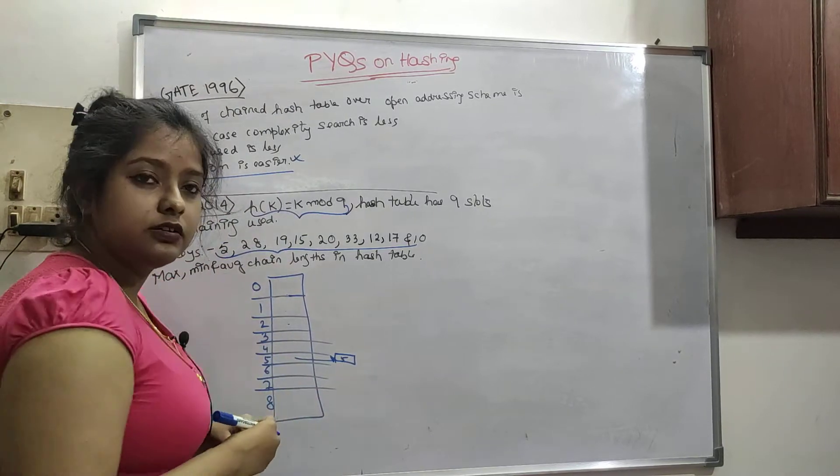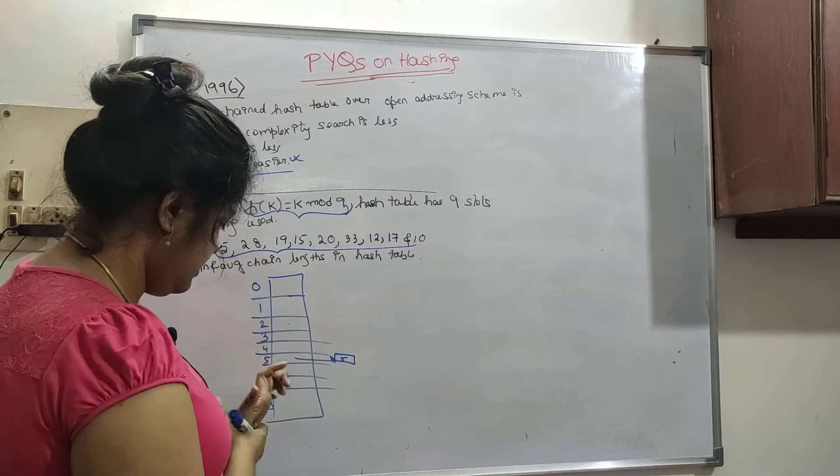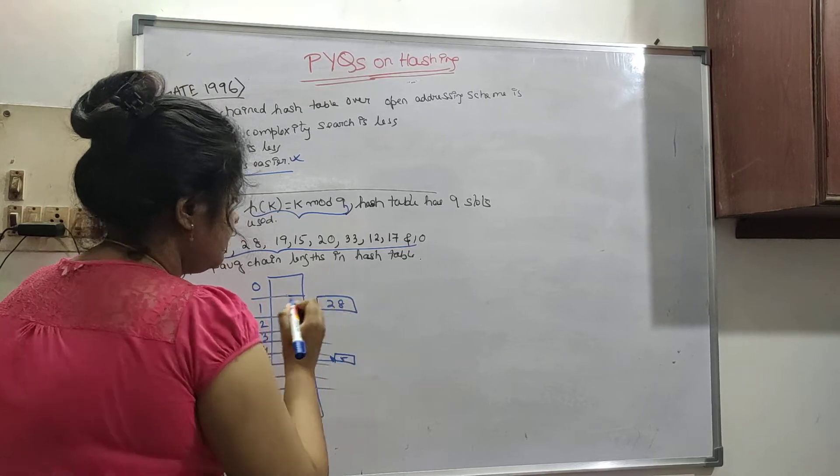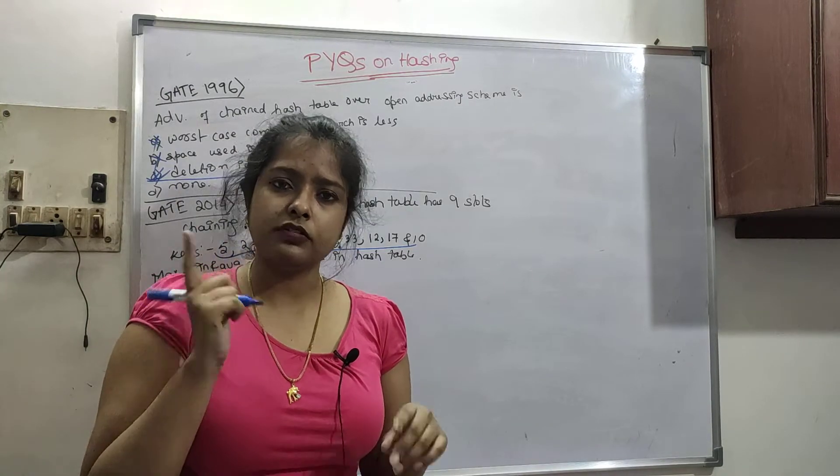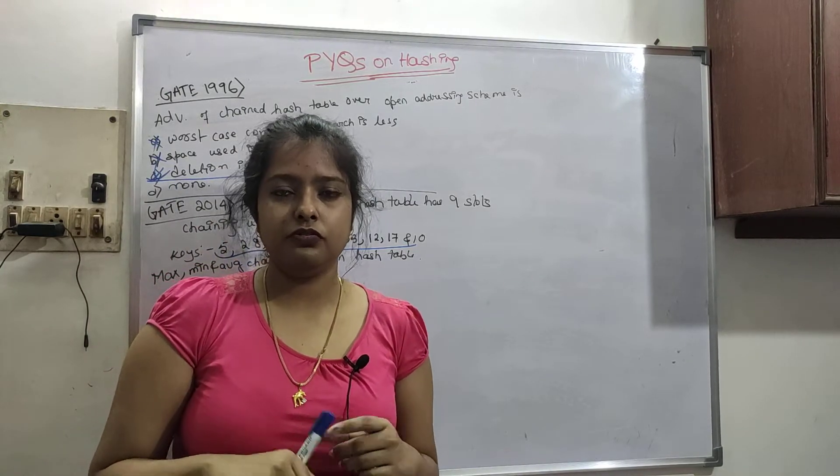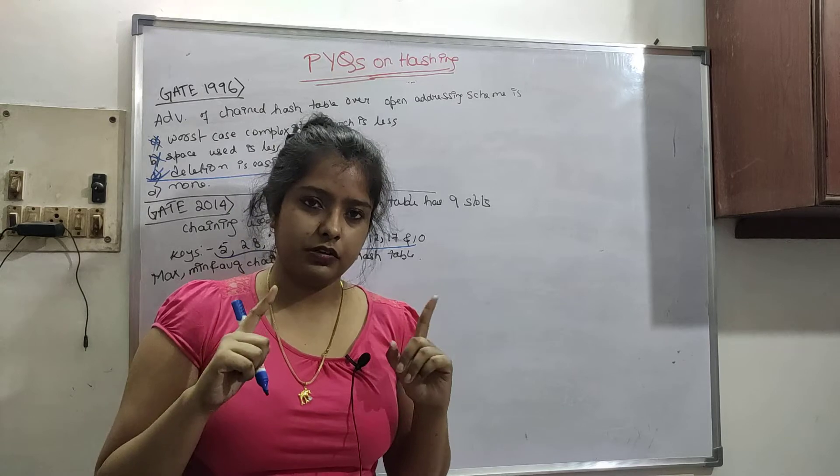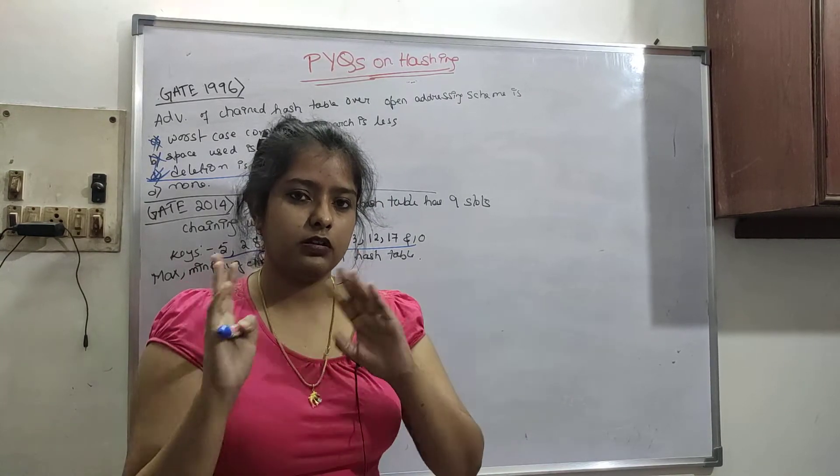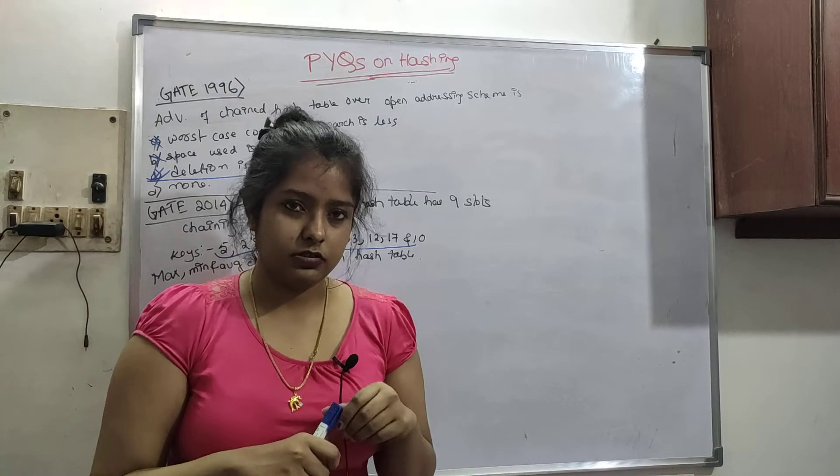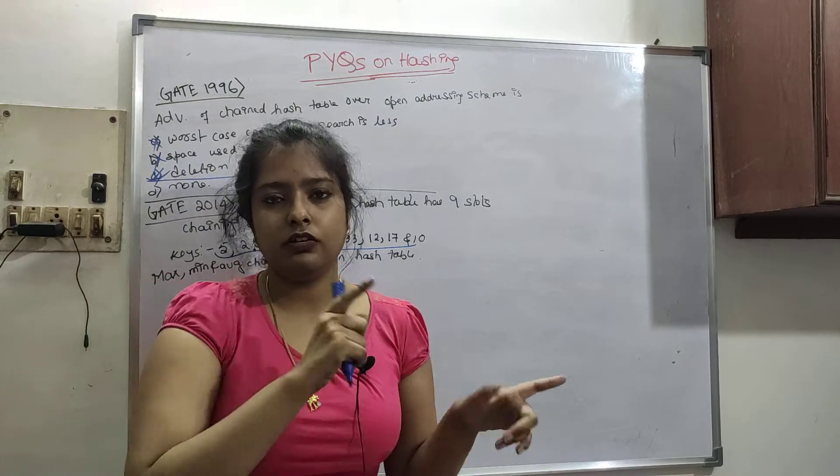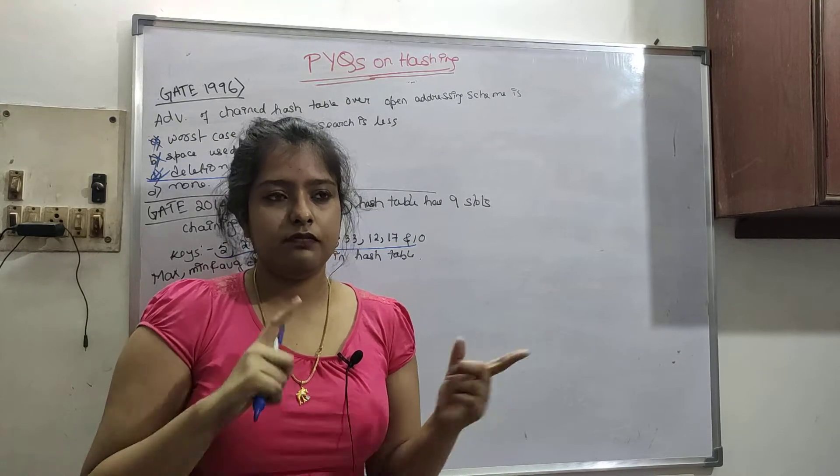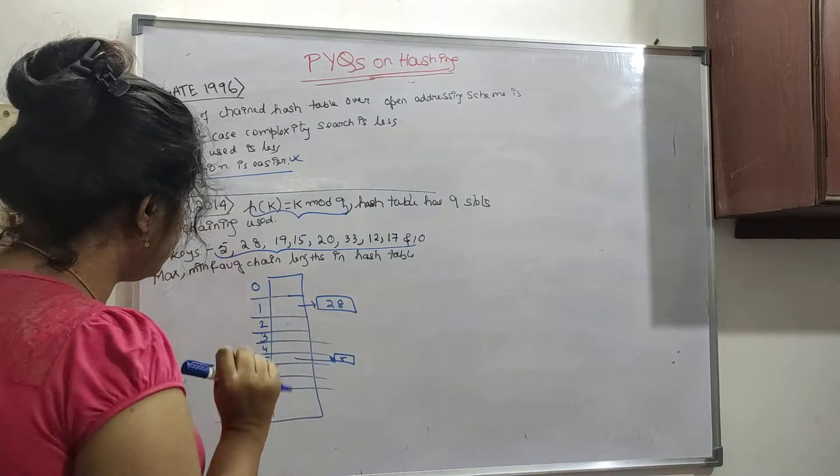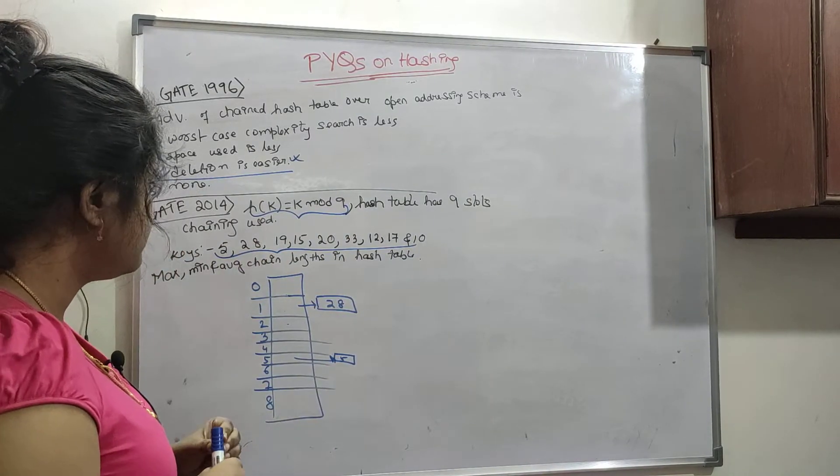Now let us say 28, 28 mod 9 means 1. So in GATE, in virtual calculator, I have seen that mod function is already present. You do not have to do your calculation with pen and paper. You can just put the mod function 28 mod 9, you will get the answer. This is basically easy and I am not very good with calculation. I am always doing calculator in virtual calculator in GATE is given.